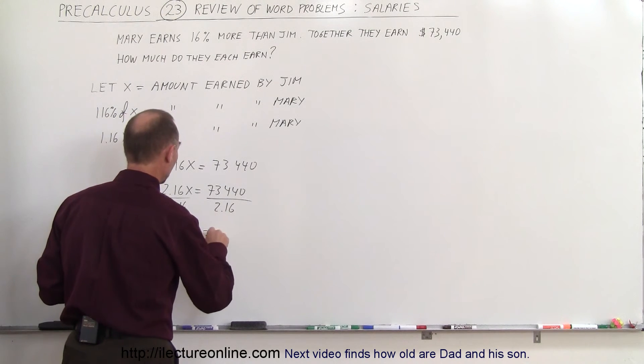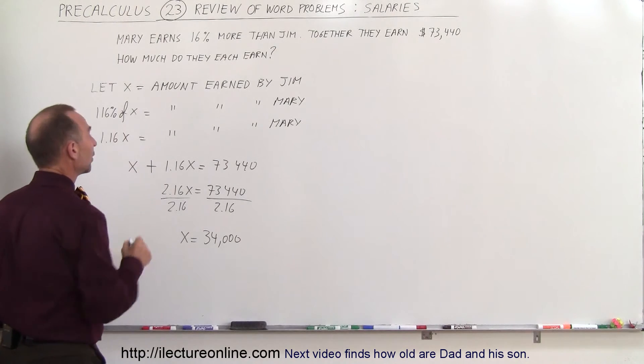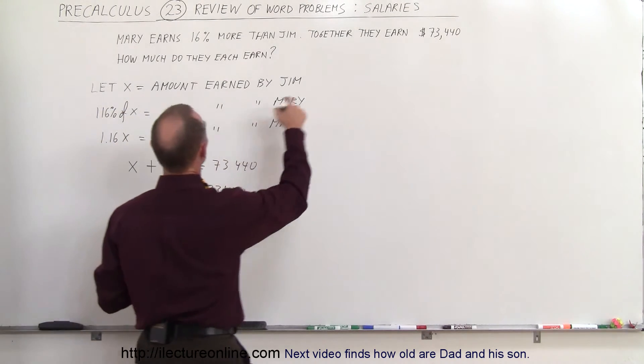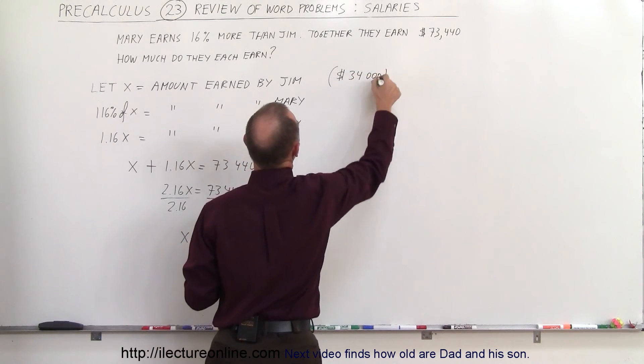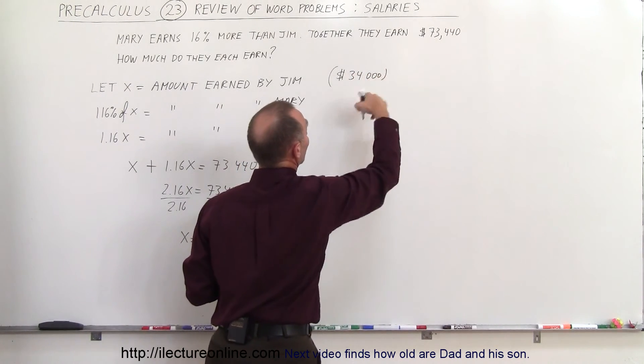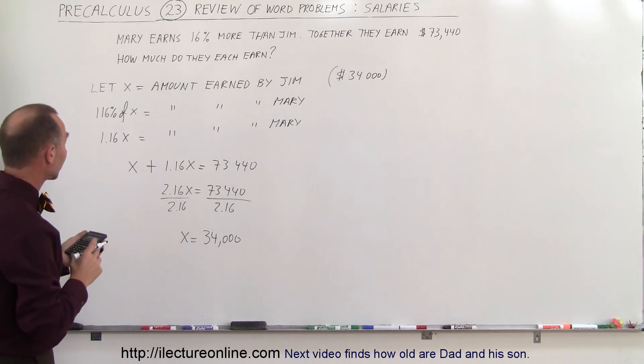Which means that Jim earns $34,000 and Mary would earn 1.16 times that much. So Jim earns $34,000 and the remainder can be found by subtracting those two or simply, let's multiply it out first and check to see if it's correct.